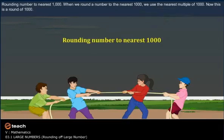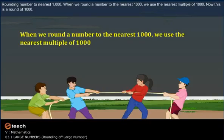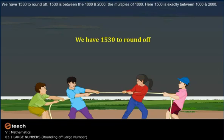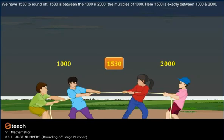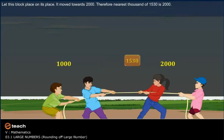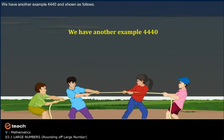Rounding a number to the nearest thousand. When we round a number to the nearest thousand, we use the nearest multiple of thousand. We have one thousand five hundred thirty to round off. It is between one thousand and two thousand. One thousand five hundred is exactly between one thousand and two thousand, so the block moved towards two thousand. Therefore, the nearest thousand of one thousand five hundred thirty is two thousand.